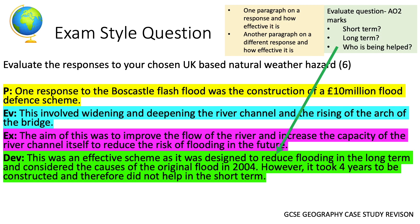Here is a model paragraph. For the point: 'One response to the Boscastle flash flood was the construction of a £10 million flood defence scheme.' For evidence: 'This involved widening and deepening the river channel and raising the arch of the bridge. The aim of this was to improve the flow of the river and increase the capacity of the river channel to reduce the risk of flooding in the future.' This gives specific examples of what the scheme involved and explains why it would help Boscastle.